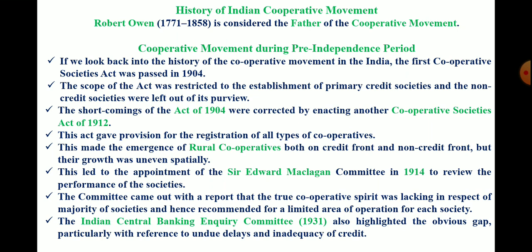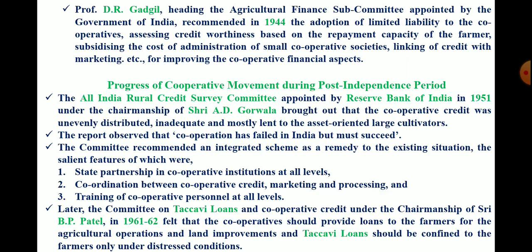The Indian Central Banking Inquiry Committee in 1931 also highlighted an obvious gap, particularly with reference to undue delays and inadequacy of credit. Subsequently, Professor D.R. Ghatgil, heading the Agriculture Finance Sub-committee appointed by the Government of India, recommended in 1944 the adoption of limited liability to cooperatives, assessing credit worthiness based on repayment capacity of farmers, subsidizing the cost of administration of small cooperative societies, and linking credit with marketing for improving cooperative financial aspects.